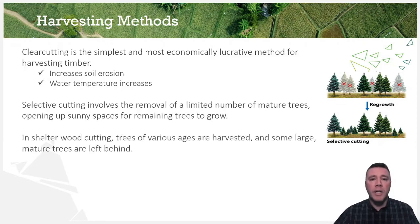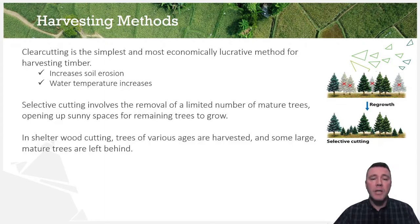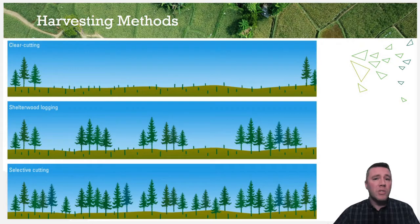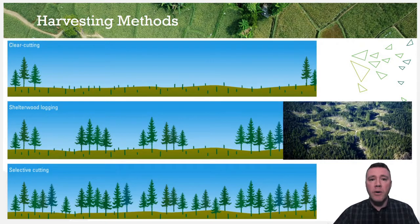Shelter-wood cutting is sometimes described as an intermediate between clear-cutting and selective cutting. In shelter-wood cutting, sections of forested area are harvested, leaving behind collections of large, mature trees. Although still not as profitable as clear-cutting, the result is an area of land where enough trees remain to mitigate soil erosion and an increase in water temperature.